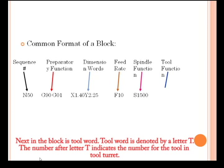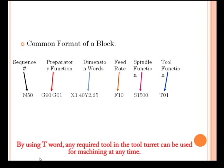Next in the block is the tool word, denoted by letter T. The number after letter T indicates the number for the tool in the tool turret. By using T word, any required tool in the tool turret can be used for machining at any time.